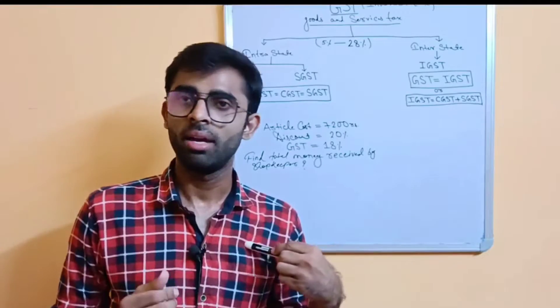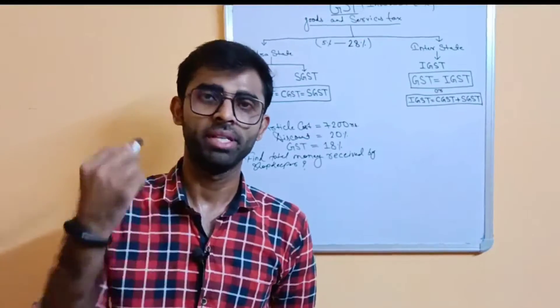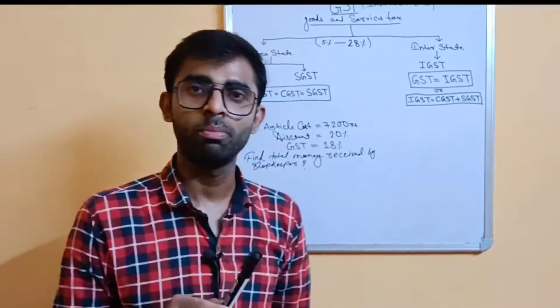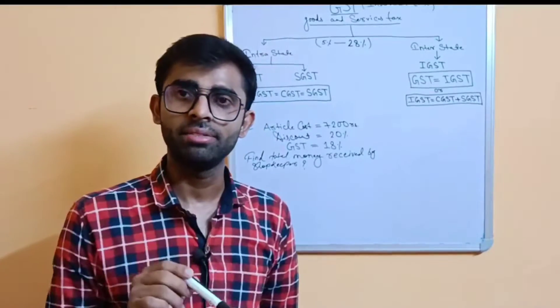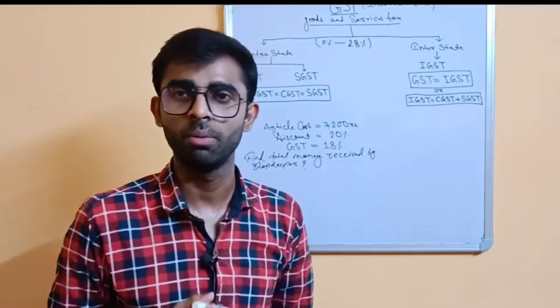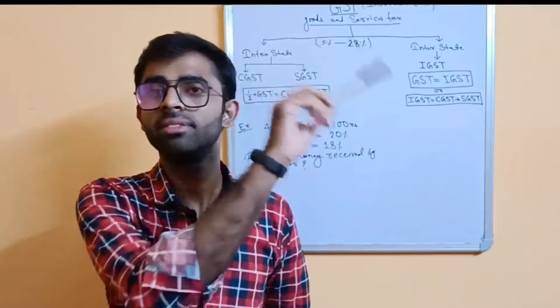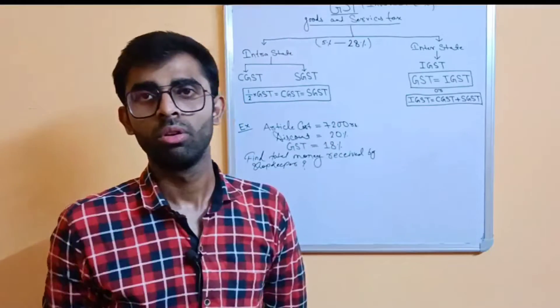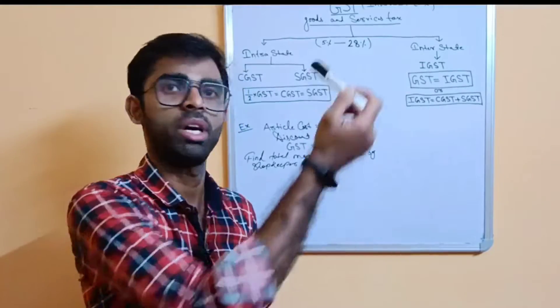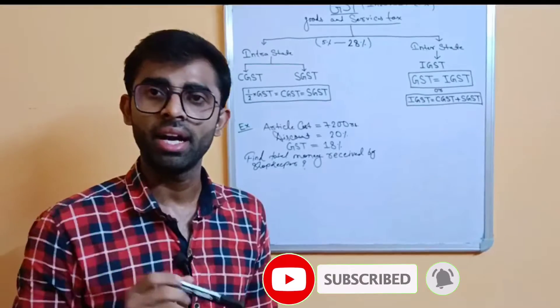In indirect tax, suppose I am a guy. I go to a market and buy a toothpaste. Suppose I'm buying toothpaste. The price is 25 rupees. So I paid 25 rupees to the shopkeeper. But in his account only 20 rupees will come, because 5 rupees he has to pay as tax to the government.